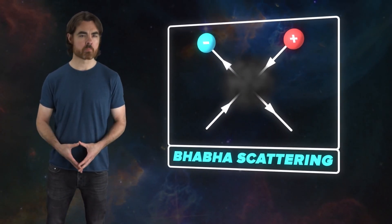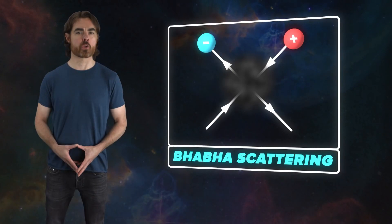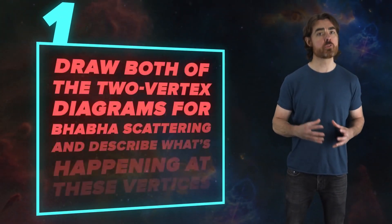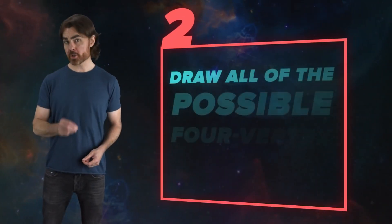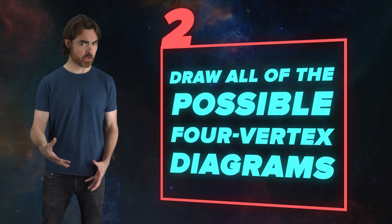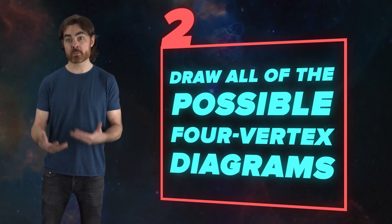But for now, I want to give you a chance to play with Feynman diagrams yourselves. So I have a challenge question for you. When an electron and a positron interact electromagnetically, we call it Barber scattering. It's an interesting case. The most important Feynman diagrams for Barber scattering are the two cases involving a single virtual photon, and they include two vertices each. Those diagrams seem to describe very, very different events, but they lead to exactly the same result. Use the rules I described in this episode to draw both of the two vertex diagrams for Barber scattering and describe what's happening at each of these vertices. Then, I want you to try to draw all of the possible four vertex diagrams. For the latter, don't bother with what we call the self-energy diagrams in which electrons or positrons emit and then reabsorb a photon.